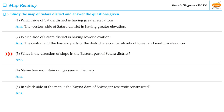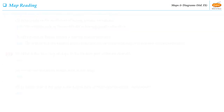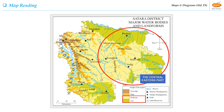Students, the third question of this activity is: What is the direction of slope in the eastern part of Saatara district? The central and eastern parts of the district are comparatively of lower and medium elevation.